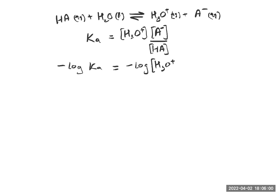Plus minus log A- concentration over HA concentration. Minus log Ka is the pKa.